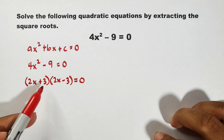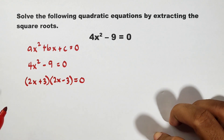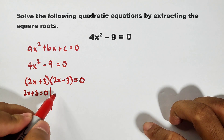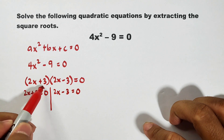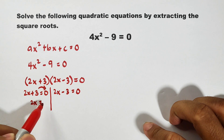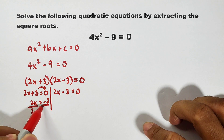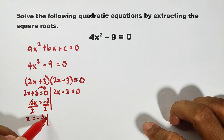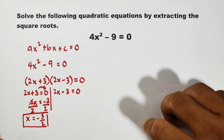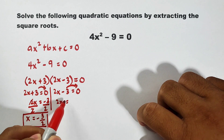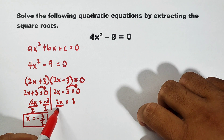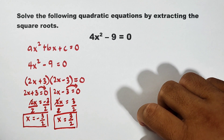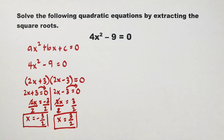The square root of 4x squared is 2x. The square root of 9 is 3. After factoring it out, we need to equate each factor to 0. So we have 2x + 3 = 0 and 2x - 3 = 0. Transposing gives 2x = -3, then divide both sides by 2. For the other equation, transposing gives 2x = 3, divide both sides by 2, so x = 3/2. To sum it up, the solutions of this equation are positive and negative 3 over 2.